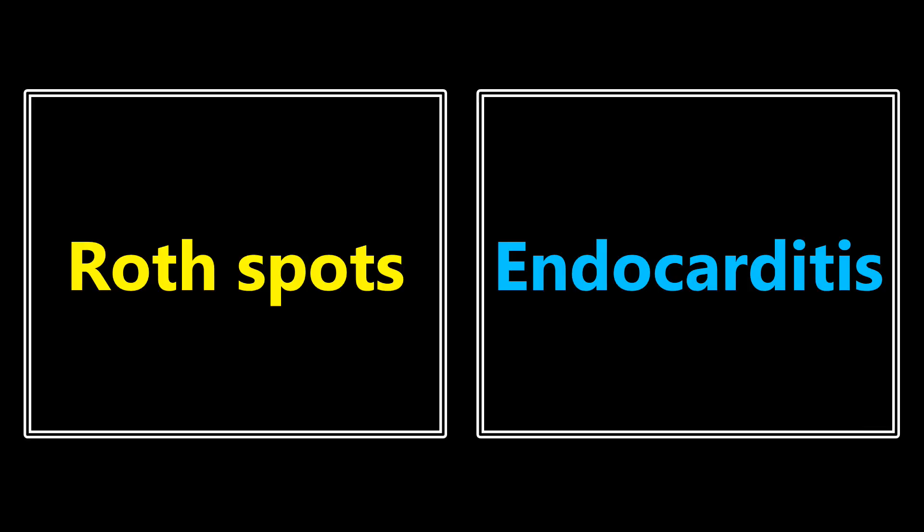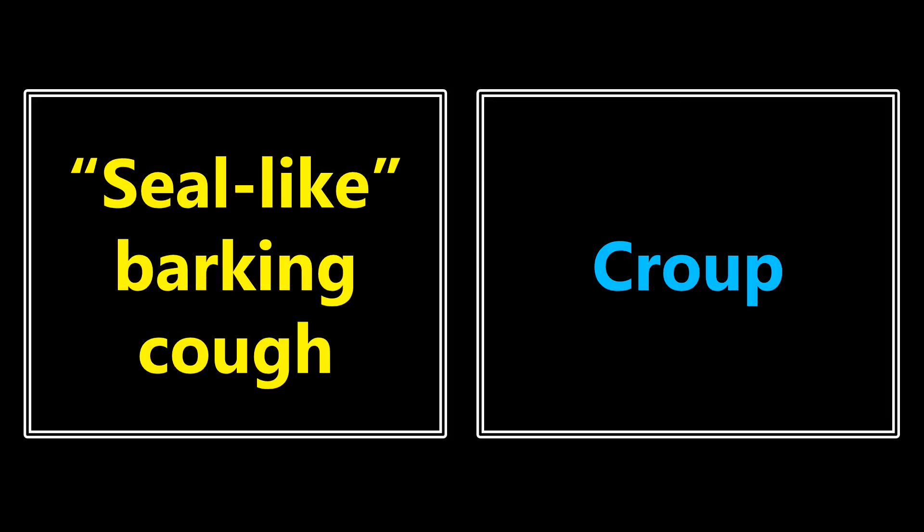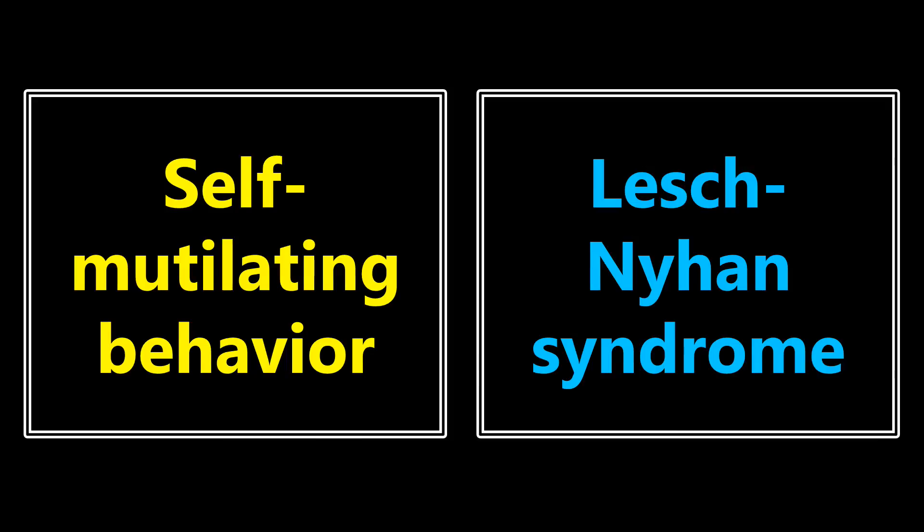Roth spots: if you see this, it's another sign of endocarditis. Seal-like barking cough: most medical students already know this one — it's croup. Self-mutilating behavior: you're primarily going to see this in young boys, and that's going to be talking about Lesch-Nyhan syndrome.